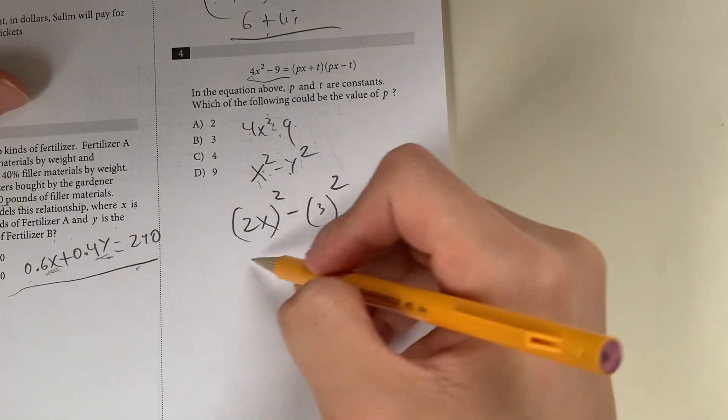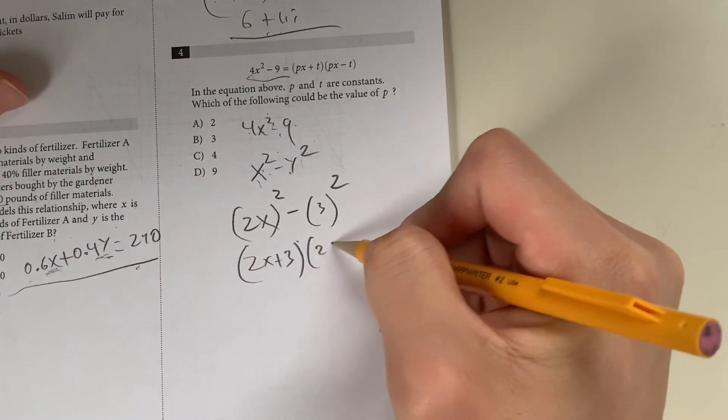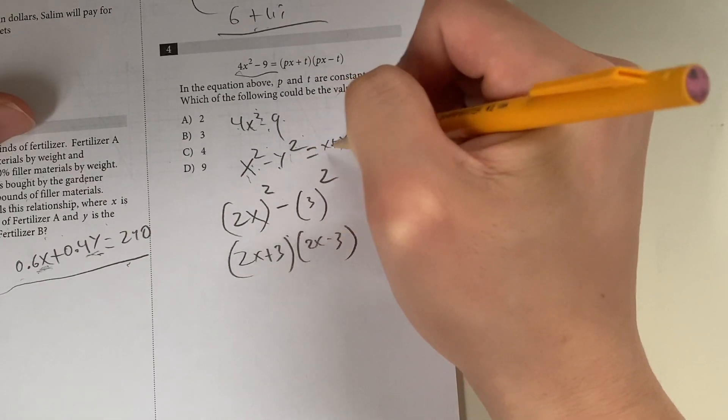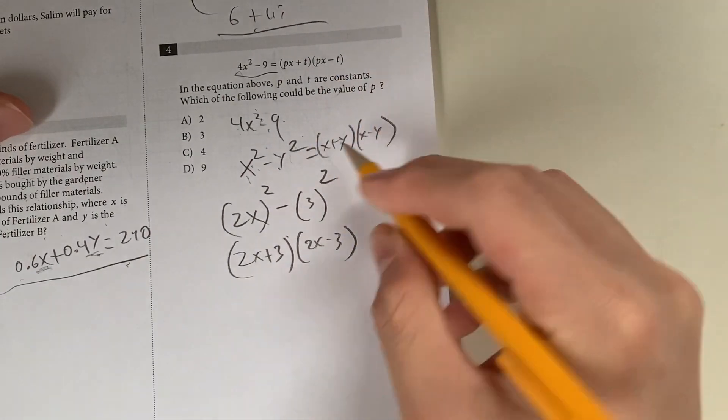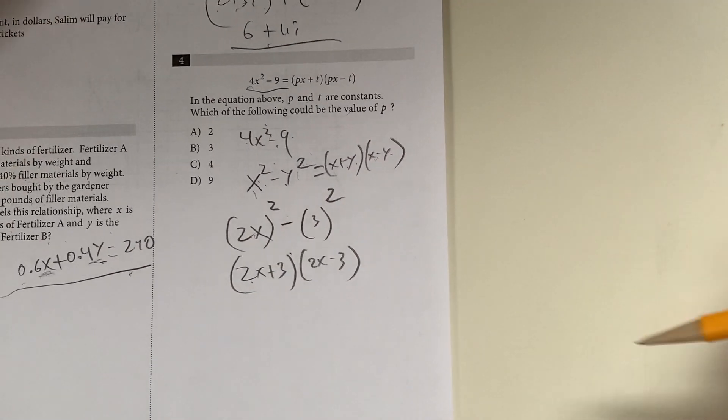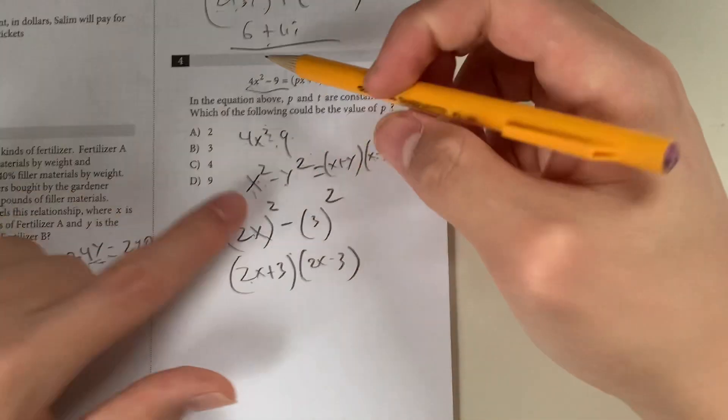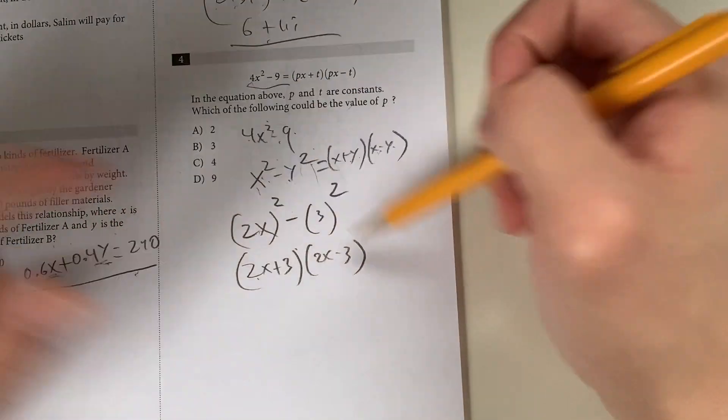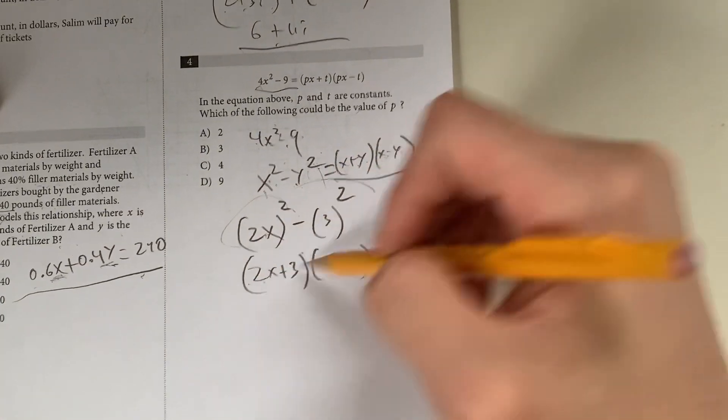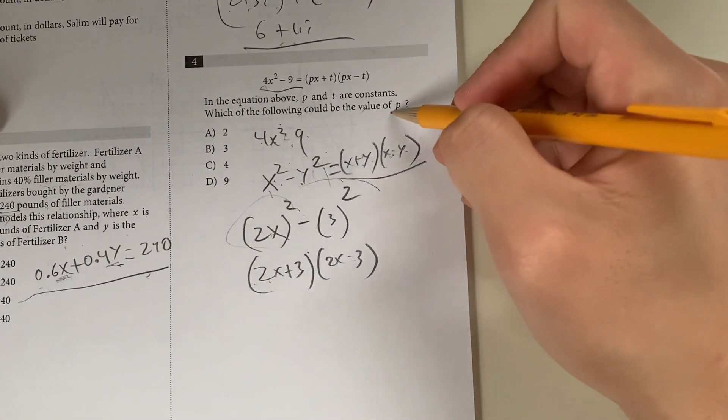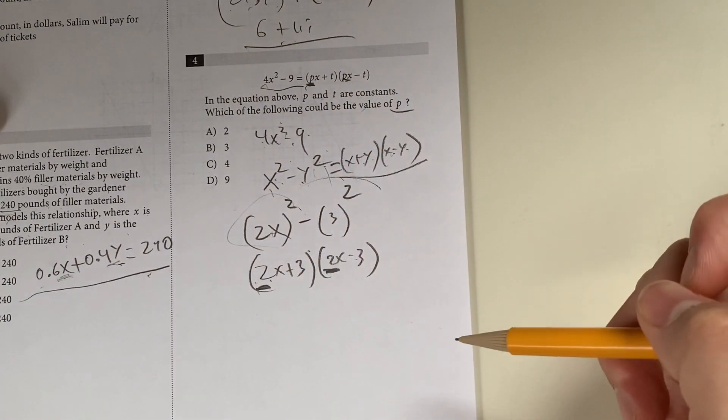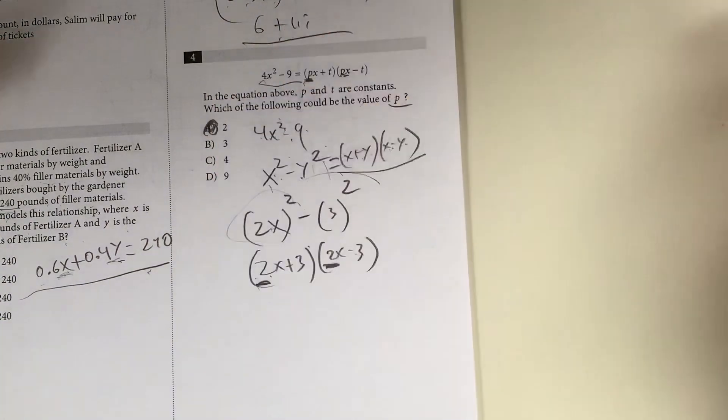So 2x squared minus 3 squared. What are the factors? It's going to be 2x plus 3, 2x minus 3, because x squared minus y squared equals x plus y times x minus y. If you watched my previous video on the difference of squares, you know that it factors out to this. What's the value of p? p is this value, the first value. In this case, it's going to be 2. The answer has to be A.